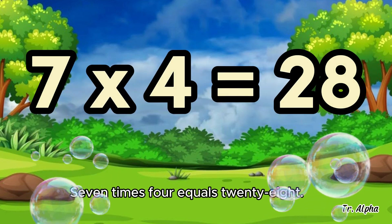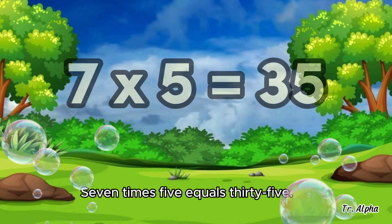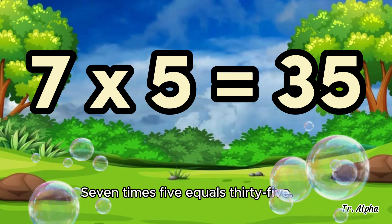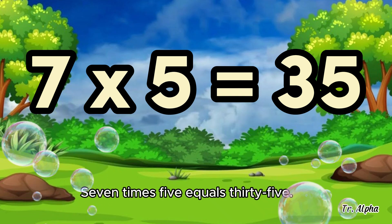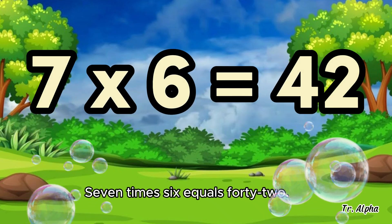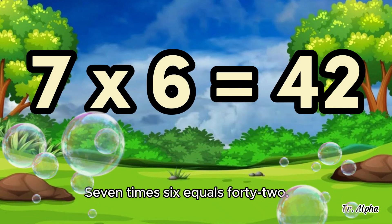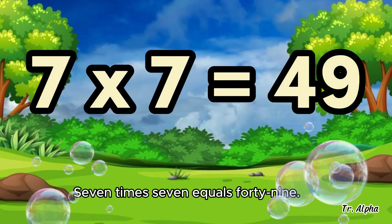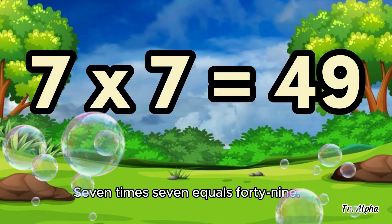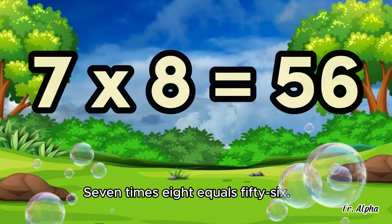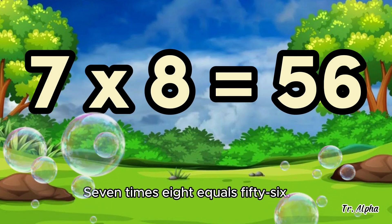7 times 4 equals 28. 7 times 5 equals 35. 7 times 6 equals 42. 7 times 7 equals 49.